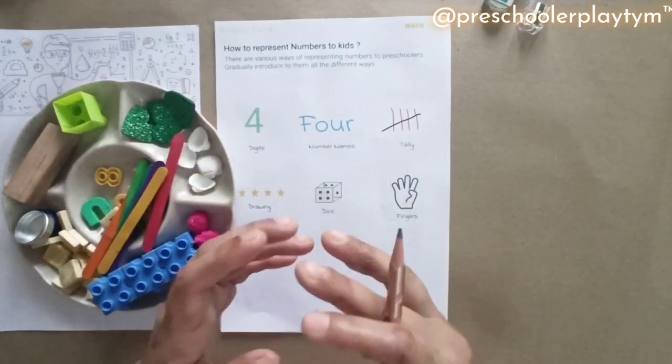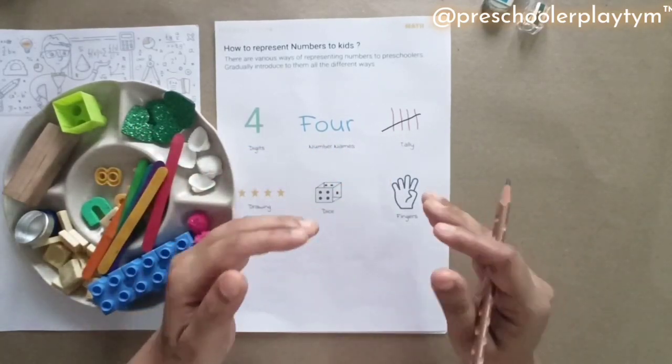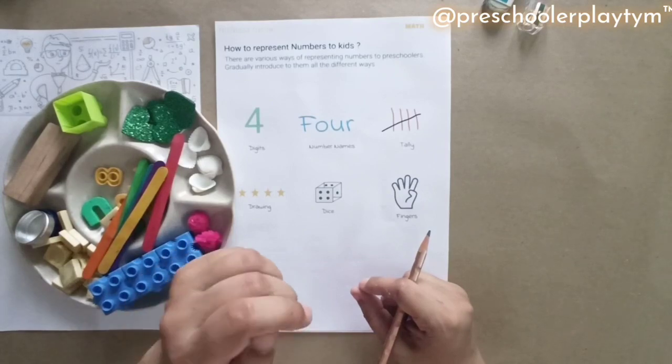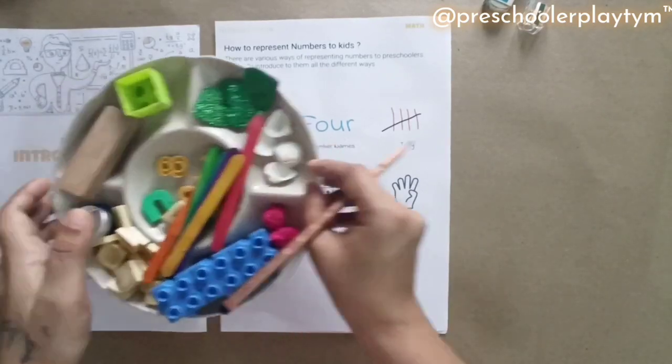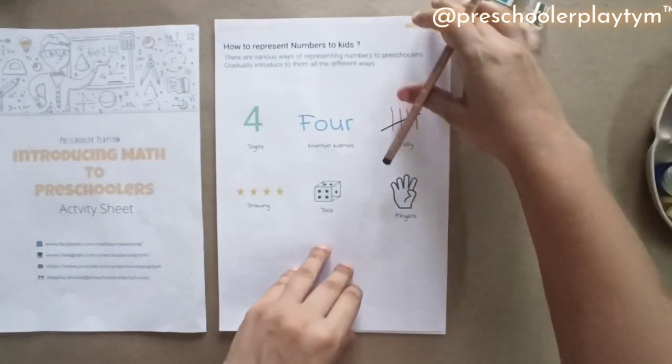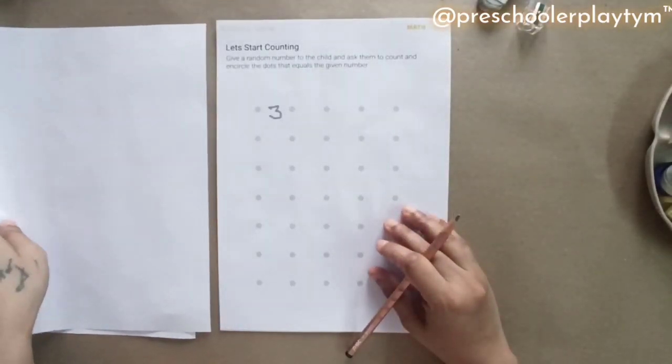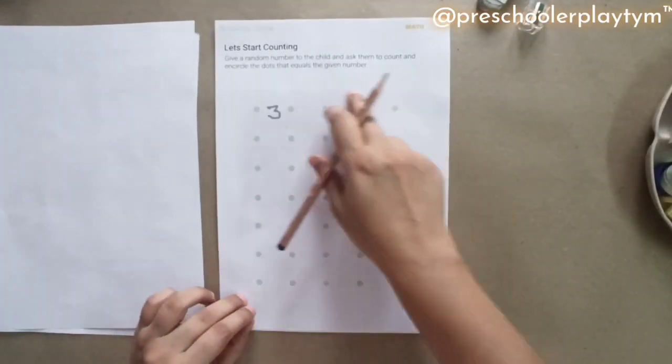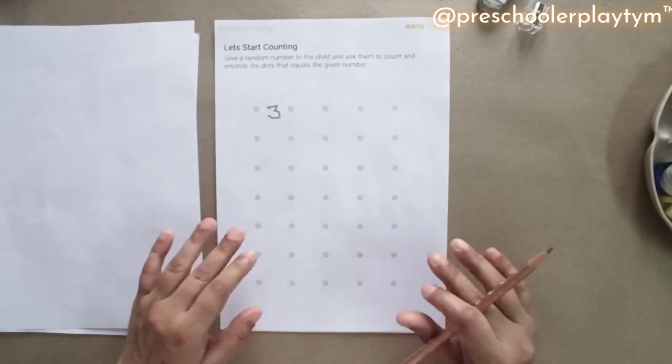If your kid doesn't understand one way, you pick up any other object and introduce them to numbers. Once they are introduced, I would want you to try this one simple activity that I've created for them, and that is this. If you see, it just has dots here, nothing more.